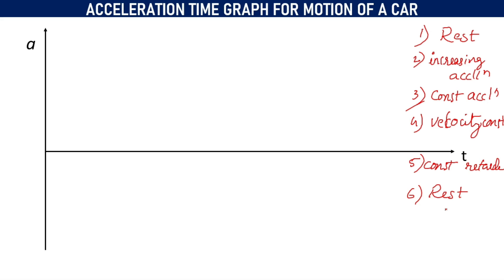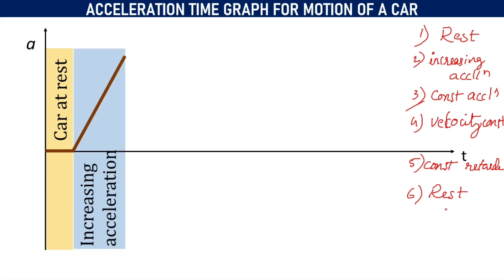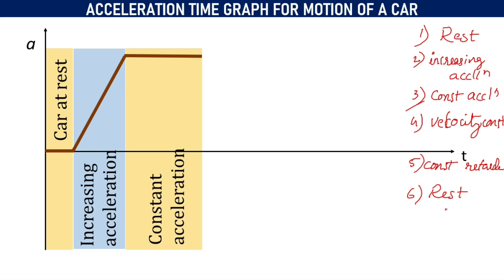Here there are six portions to observe. Apply the different graphs we already studied. First, when the car is at rest, we will get a straight line coinciding with the time axis. After that, the acceleration increases with respect to time — uniformly — so we get an inclined straight line. Once a certain value of acceleration has been reached, acceleration is maintained constant. Therefore, we will get a straight line parallel to the time axis.